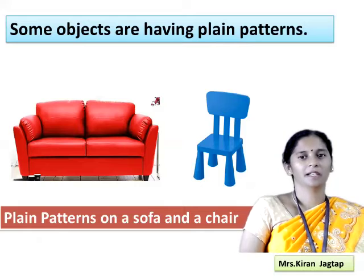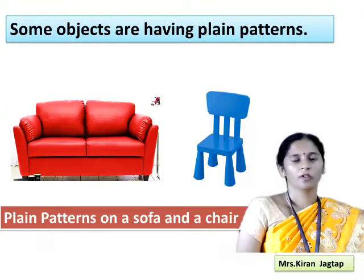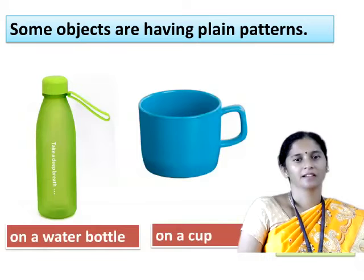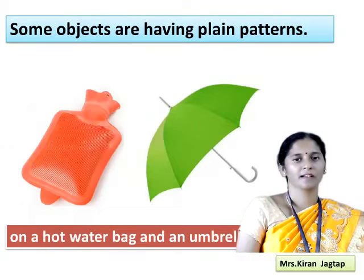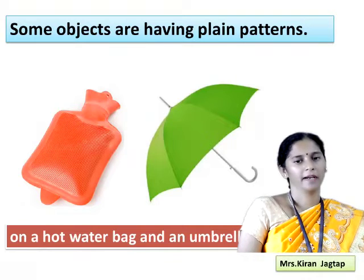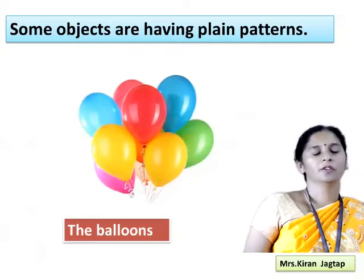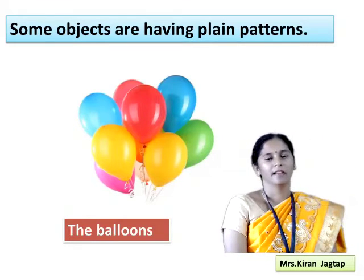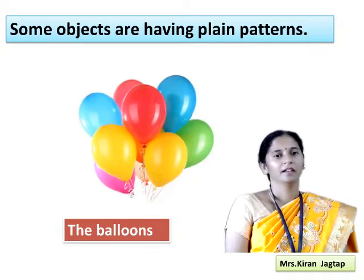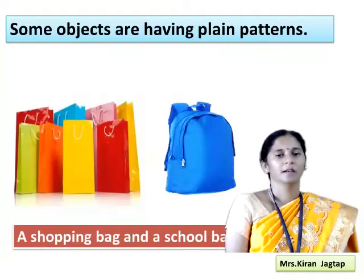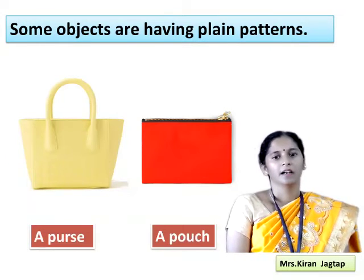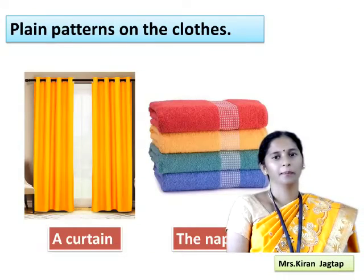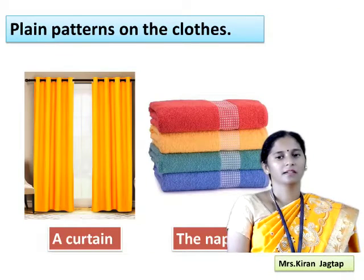Some objects are having the plane patterns like on a sofa and a chair, on a water bottle, on a cup. Some objects are having the plane pattern like a hot water bag and an umbrella. Even though we can see on the balloons — there are so many balloons but they are having different colors. Some objects like bags, like shopping bags and school bags, purse and pouch.